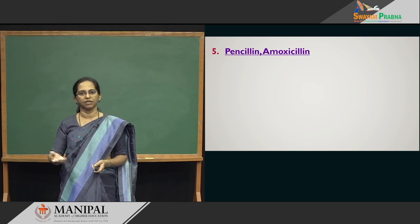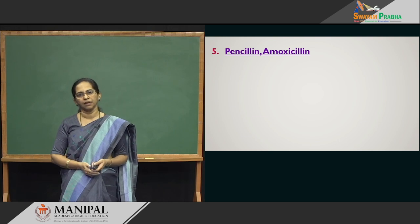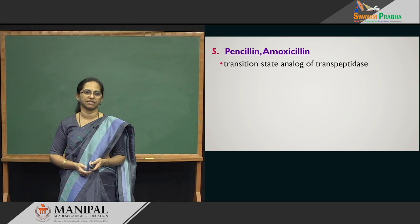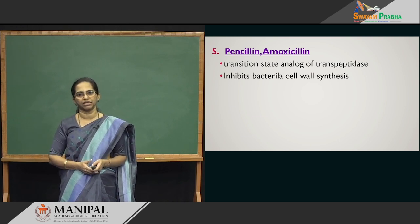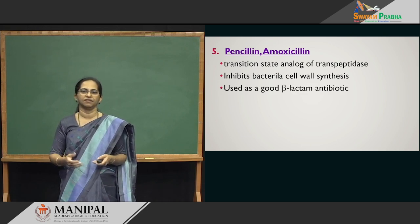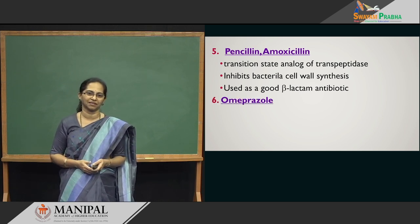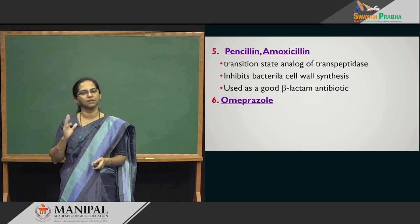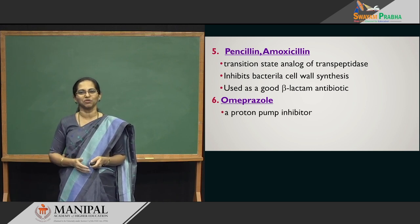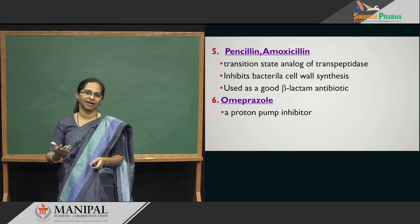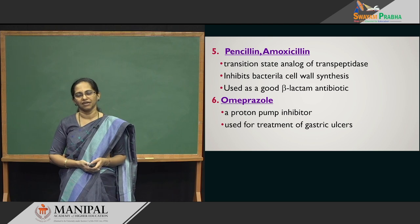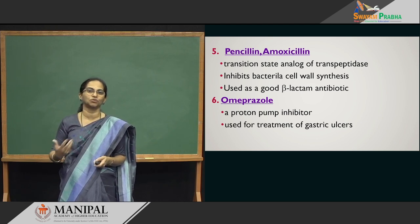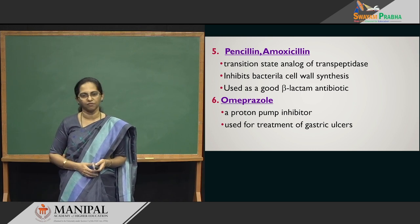Penicillin and amoxicillin are antibiotics that block the enzyme transpeptidase and prevent bacterial cell wall synthesis — not allowing bacteria to grow, making them very good antibiotics. They belong to the beta-lactam variety. Omeprazole is a powerful proton pump inhibitor for people suffering from acidity. It brings down acid production in the stomach and is used to treat gastric ulcers due to hyperacidity.